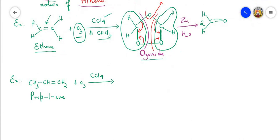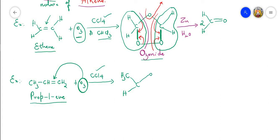In the next example, propene (prop-1-ene) when treated with ozone O₃ in the presence of CCl₄, the ozone molecule is added across the double bond. We write CH₃ connected to this carbon, which is linked to the next carbon with one hydrogen. The double bond is converted into the ozonoid with the first, second, and third oxygen atoms, and the terminal carbon has two hydrogens.